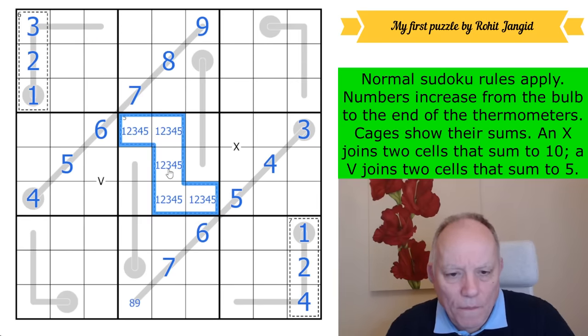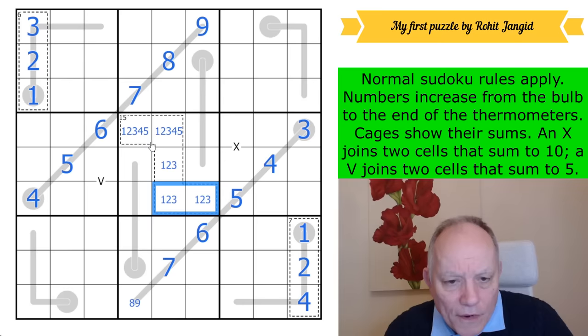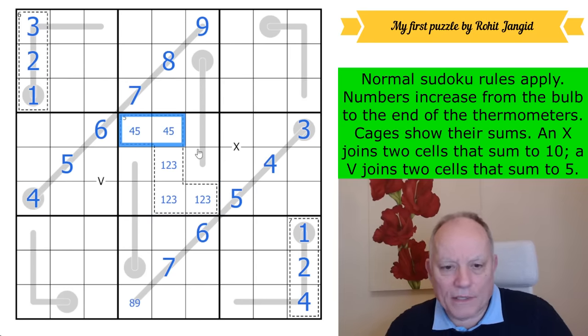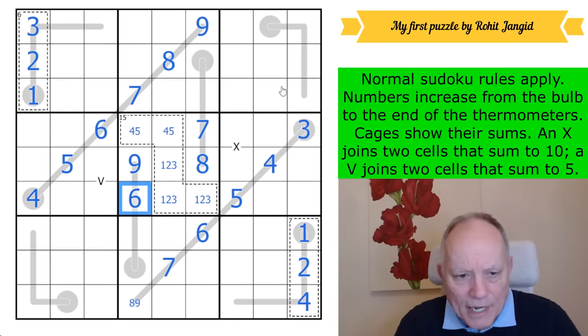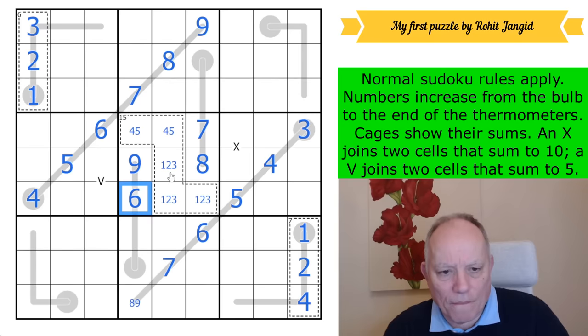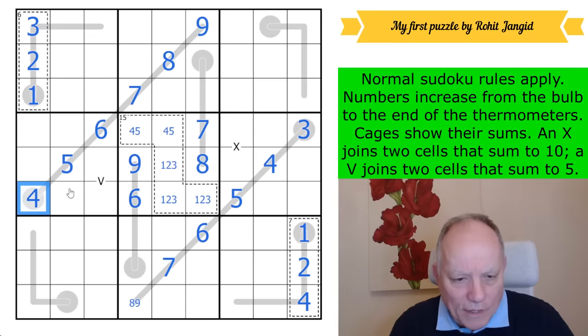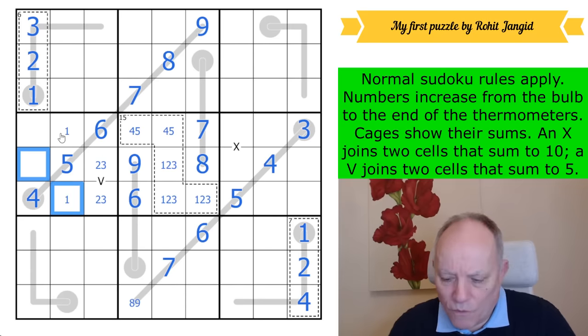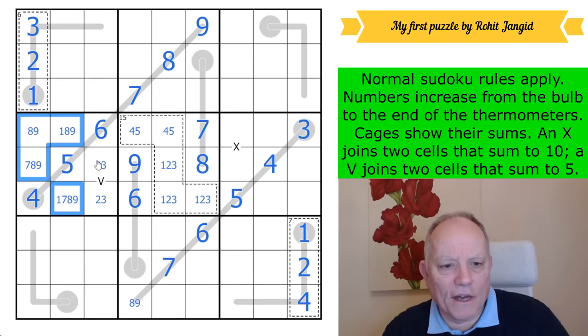We've got a 15 cage here that is going to contain the numbers one, two, three, four, five. You know that if you know your triangular numbers. The triangular number for five digits is a total of 15. That is the minimum total if you add up five different digits. This one can't be five or four. Five and four are these two because of this five-four X-wing going on there. So that's a five-four pair. This is a one-two-three triple. The other cells in the box are from six, seven, eight, nine.